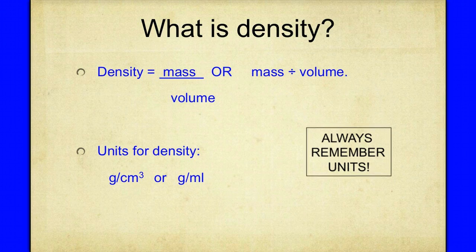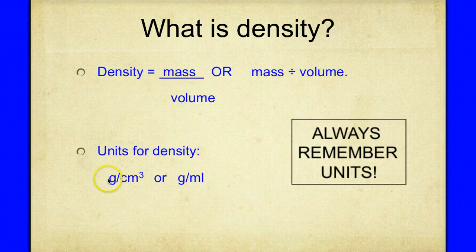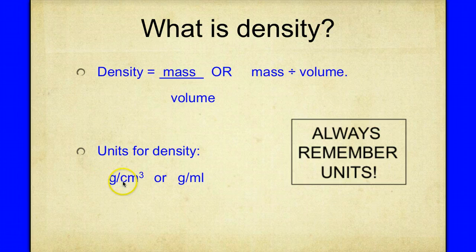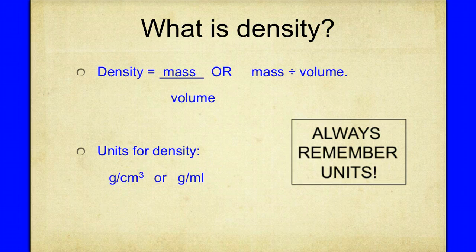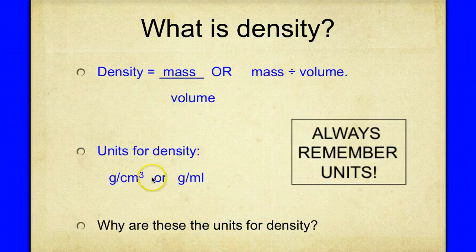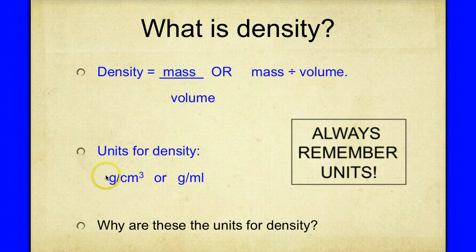Does it always have to be grams per centimeter cubed or grams per milliliter? No — it could be kilograms per centimeter cubed, kilograms per kiloliter, or kilograms per liter. But grams per centimeter cubed and grams per milliliter are the most common units you'll see, especially in our class. The units follow the same pattern as the formula: unit for mass over unit for volume.